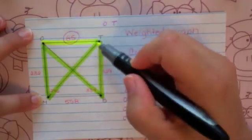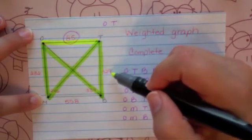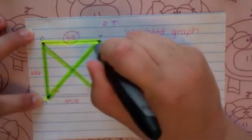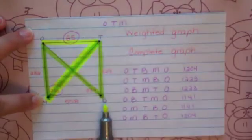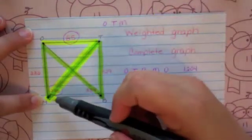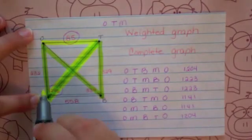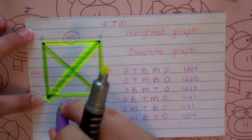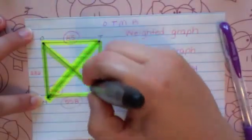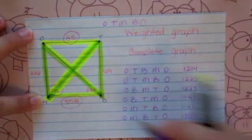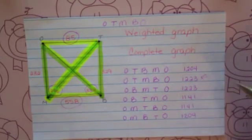Now we're in Tampa. From Tampa, we can go to Miami or Bonifay — a distance of 246 or 329. The smaller is 246, so from Tampa I'm going to go to Miami for 246. From Miami, I have no choice but to go to Bonifay, since I can't go back to Orlando yet. That's 558. And now from Bonifay, I need to go back to Orlando for 334.